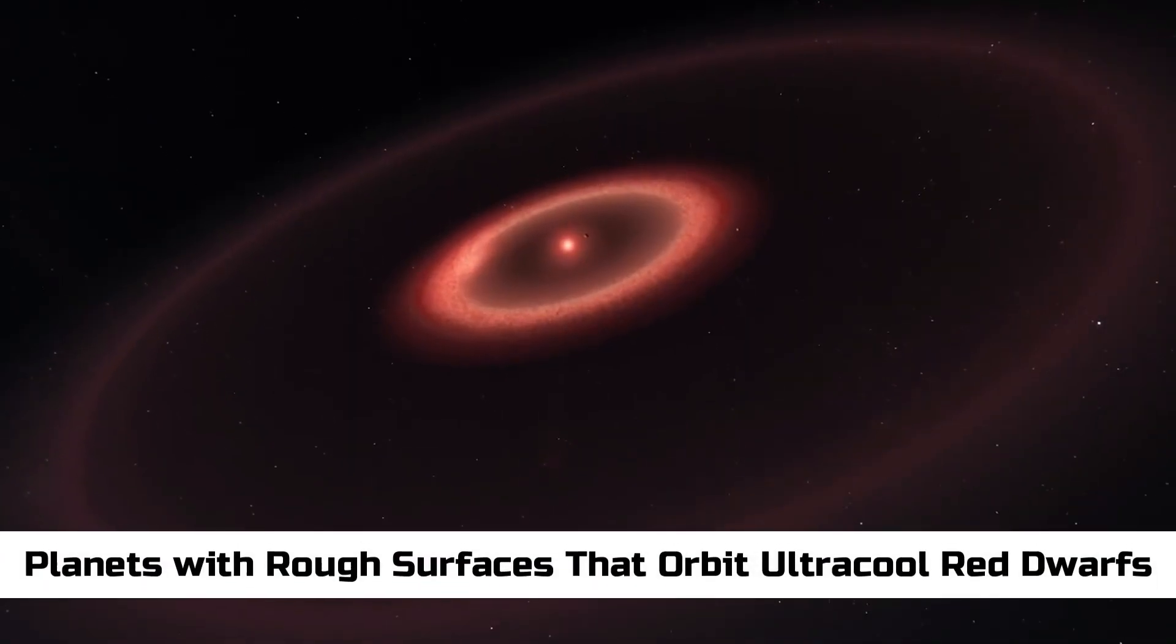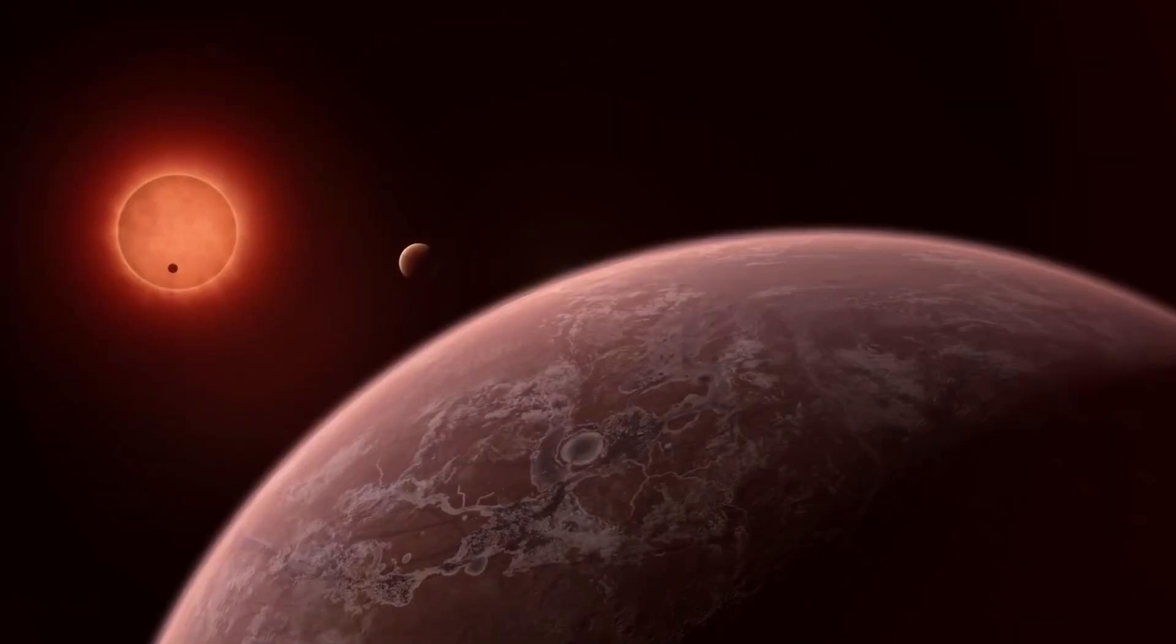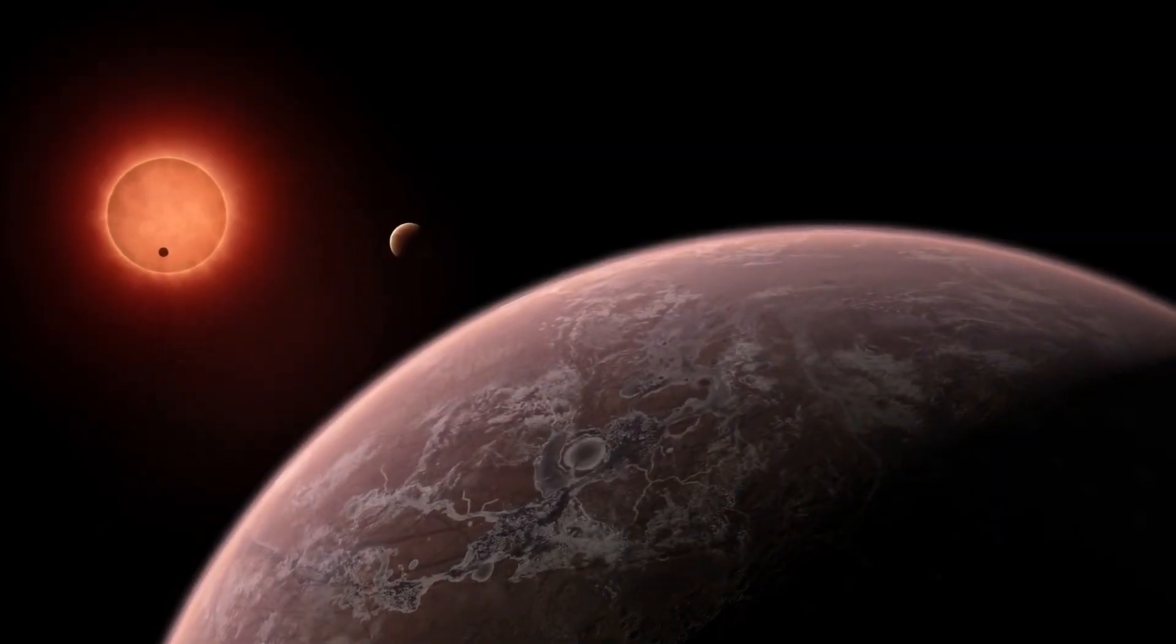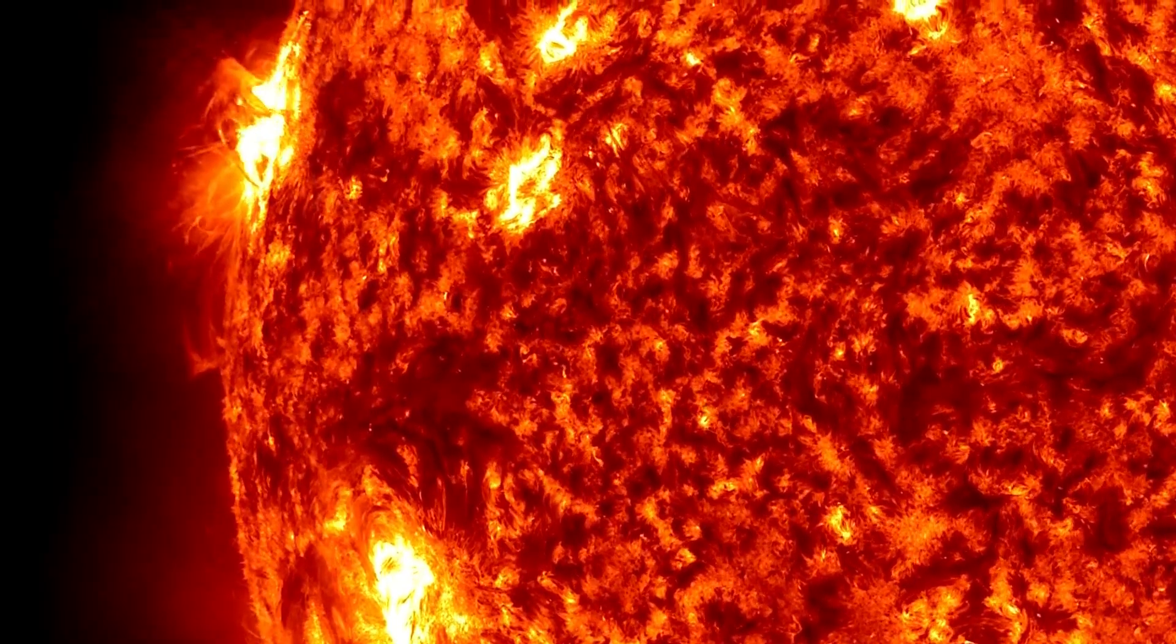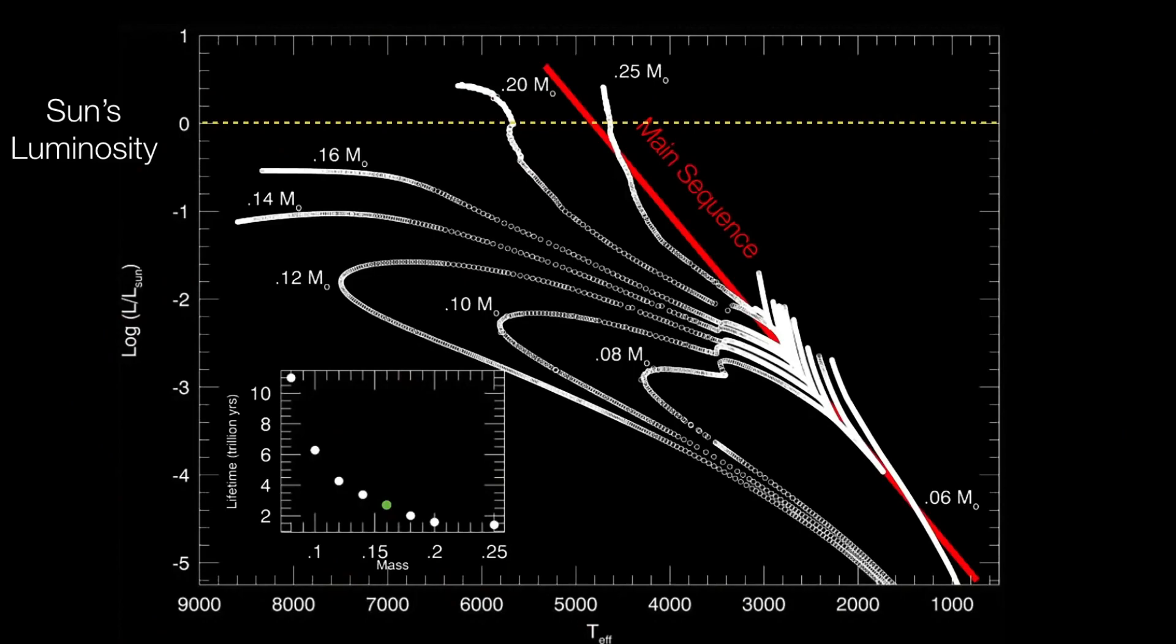Planets with rough surfaces that orbit ultra-cool red dwarfs. Early in 2017, astronomers announced they'd found seven rocky planets orbiting an ultra-cool red dwarf star, also called an M-dwarf, which is about 40 light-years away from Earth.